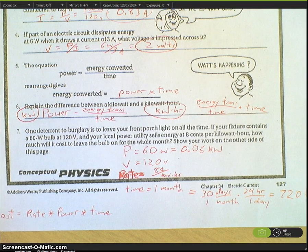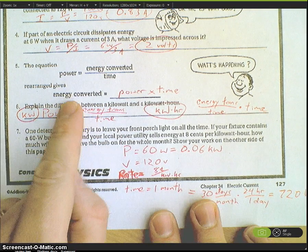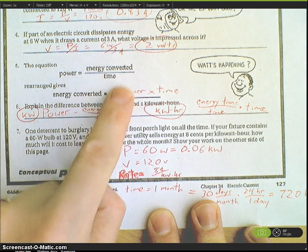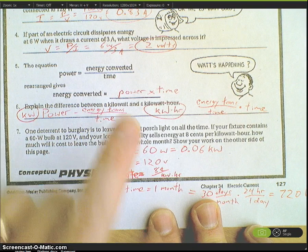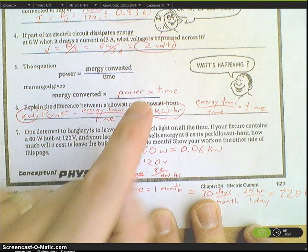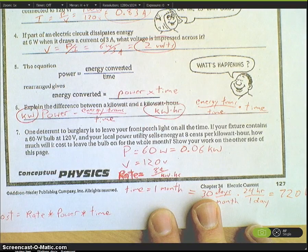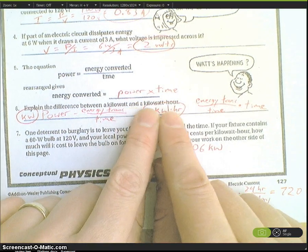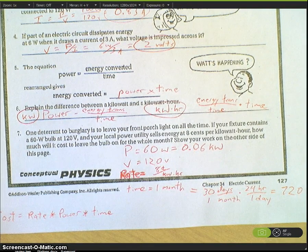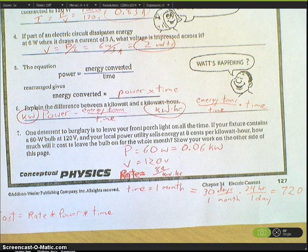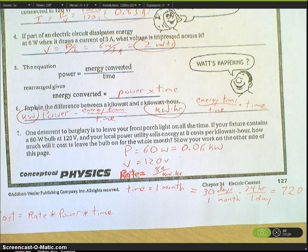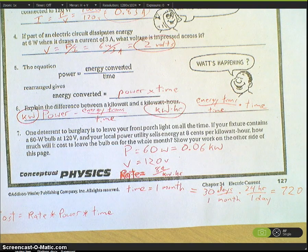Number five: energy converted. If we take this equation and multiply both sides by time, energy converted can be thought of as power multiplied by time. This is a kilowatt hour. This is what the electric company charges your parents for.